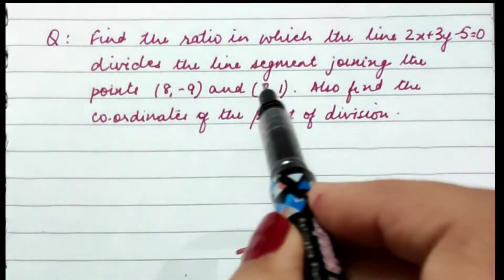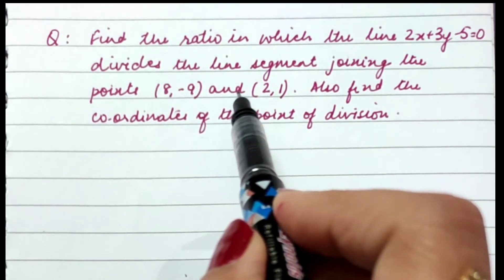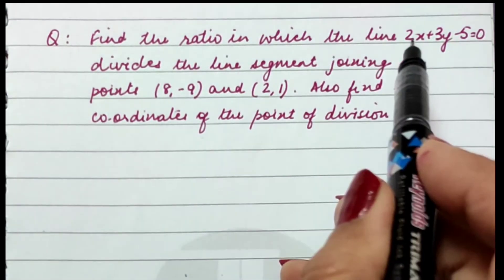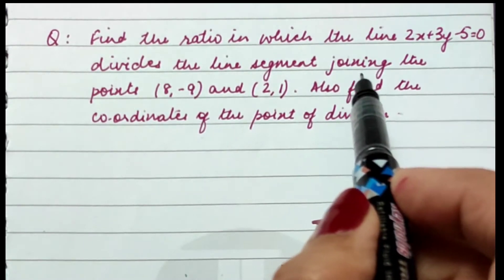If I suppose the ratio to be k:1 and find the point accordingly, then substitute it in the equation, we'll be able to get the answer. Let's try doing it.